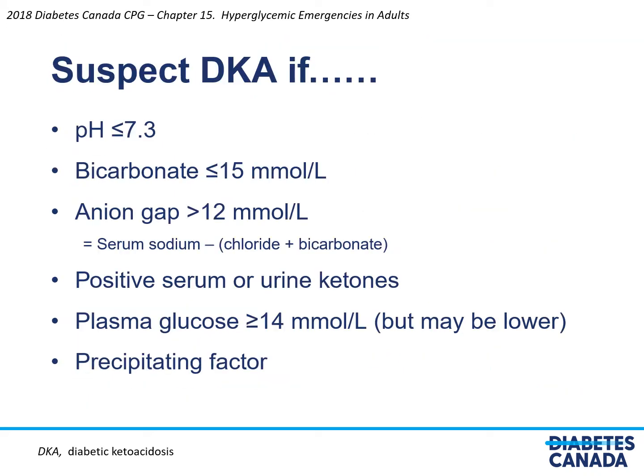You should suspect DKA if the pH is less than 7.3, the bicarbonate is less than 15 millimoles per liter, and the anion gap is greater than 12 millimoles per liter. The anion gap is calculated by taking the serum sodium and subtracting the serum chloride and bicarbonate. There should be positive serum or urine ketones, and plasma glucose should be greater than 14 millimoles per liter, but may be lower in certain conditions. Always look for the precipitating factor.